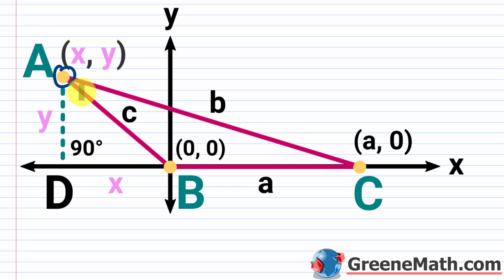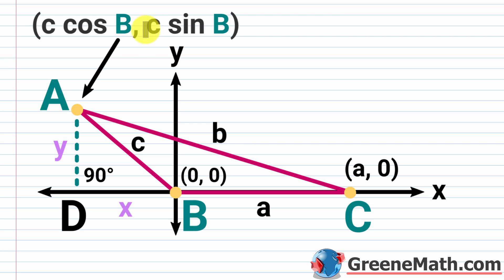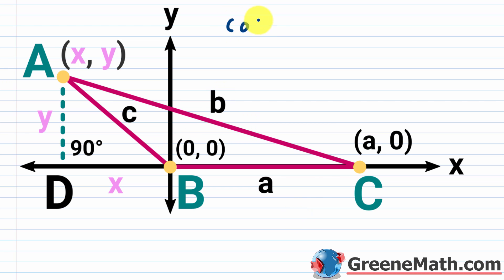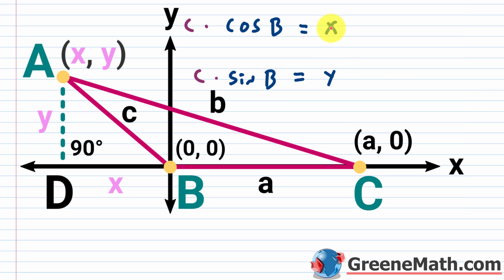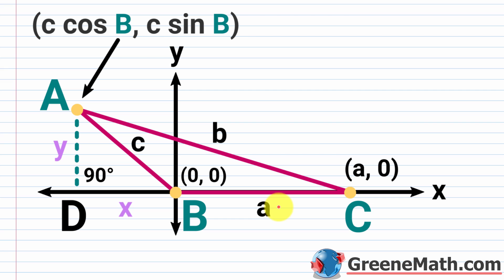Our goal is to use the distance formula, but we need a small change: instead of (x, y), we're going to use (c·cos B, c·sin B). The cosine of angle B equals x over c, and the sine of angle B equals y over c. Solving the first for x by multiplying both sides by c gives x = c·cos B. Similarly, y = c·sin B. So in place of x we plug in c·cos B, and in place of y we plug in c·sin B.